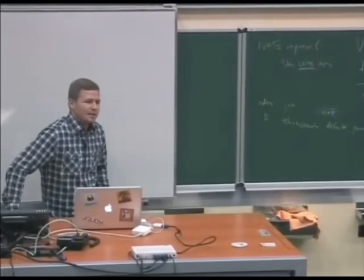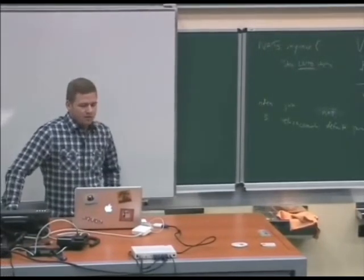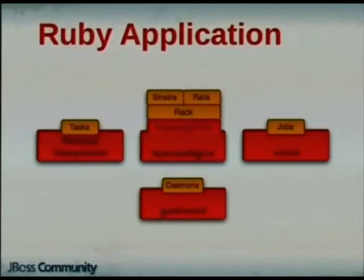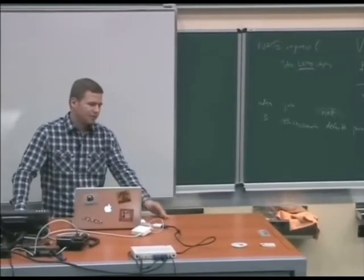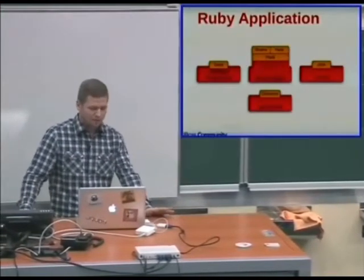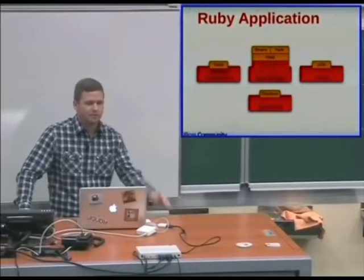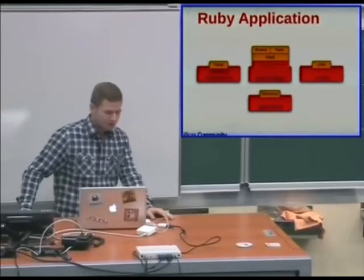It's not just recurring jobs — you also run into long-running daemons. The example we always come up with is a Twitter client, where if you want to connect to the Twitter streaming API from a Ruby application, you don't just connect inside of a web request-response cycle. They want you to connect to the streaming API, stay connected, and not just connect, disconnect repeatedly.